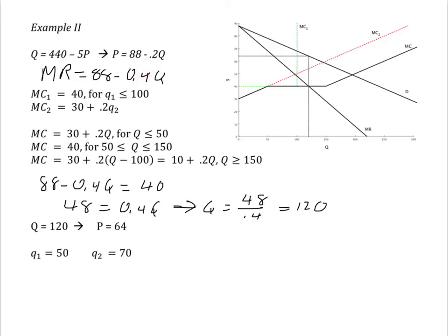120 times 0.2 is 24, subtracted from 88 gives us a price of 64, and production is divided efficiently among the two plants.